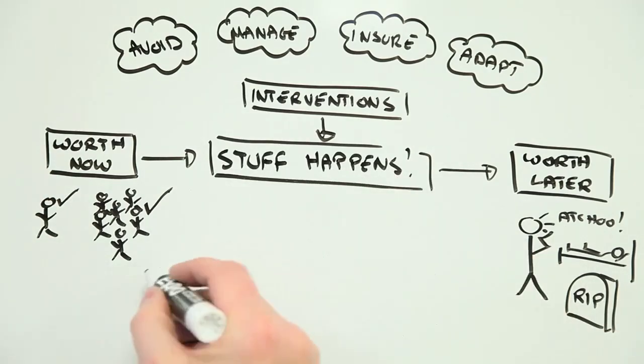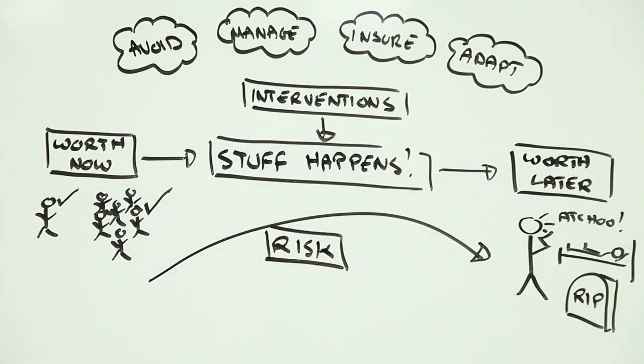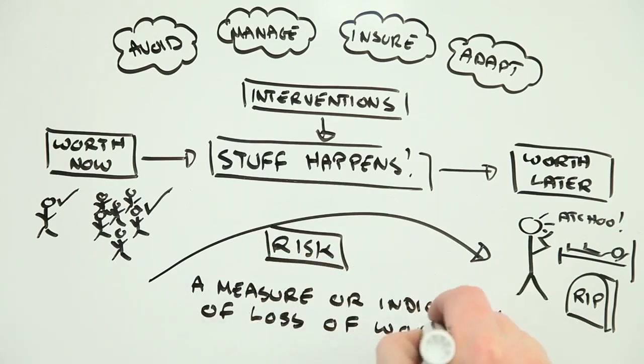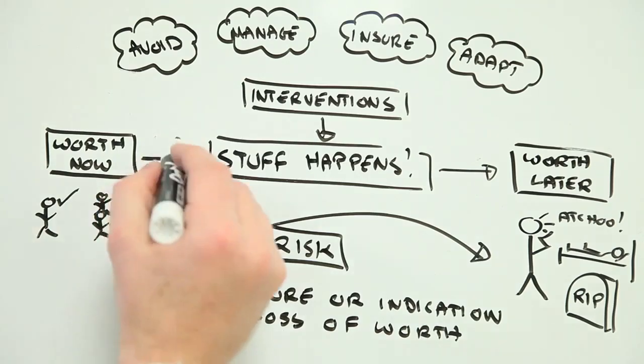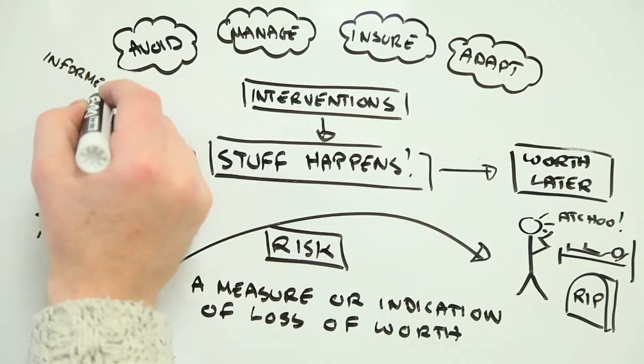To minimize this loss of worth, we need to know what contributes to ill health, how big an effect we're looking at, and how best to intervene. And this is where understanding health risk—that number that indicates the probability of a specific health impact occurring—is so important.